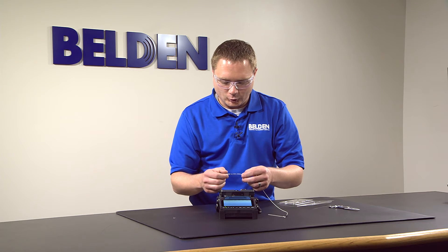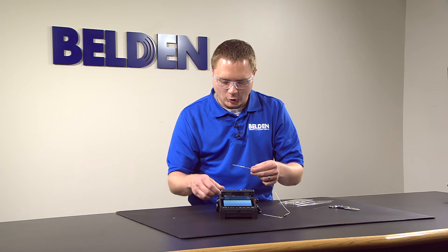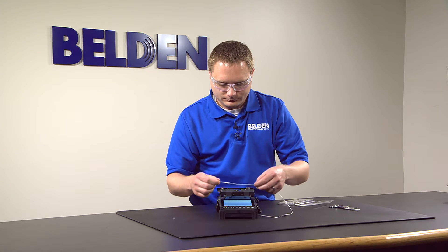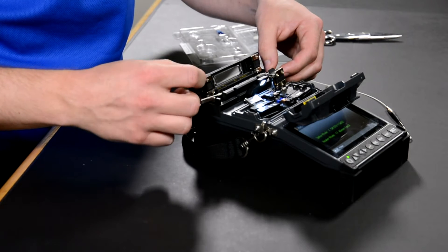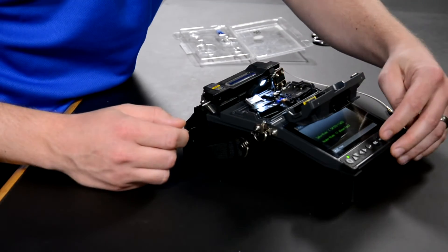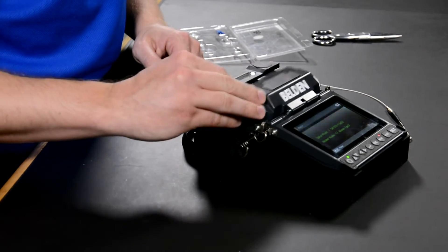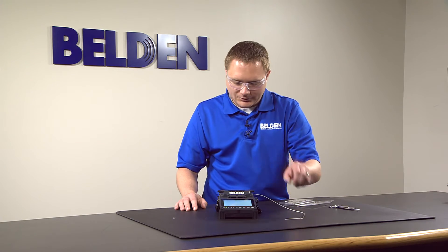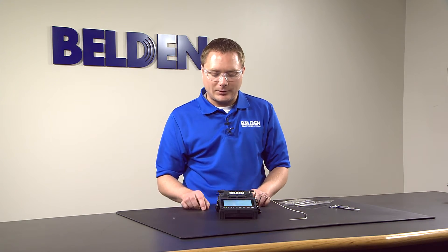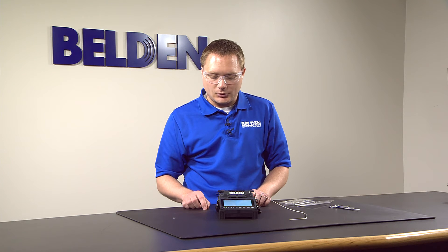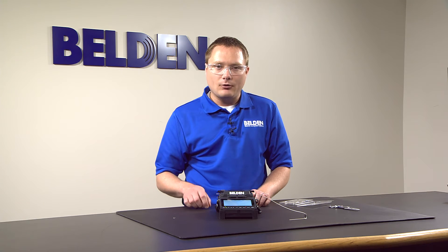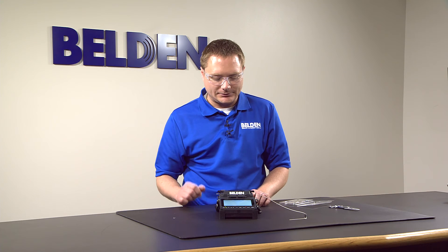Now that the heat shrink tube is over the splice correctly we can open up the oven. Place that in the oven, close that and then hit the heat button and the light's going to come on. Again, just please make sure that whatever splicer you're using and the connector that you're using that you check your installation guide for those proper settings on your oven and your splice.